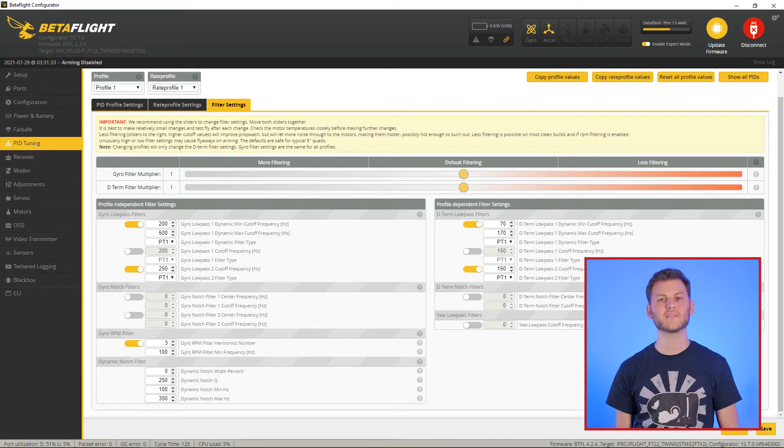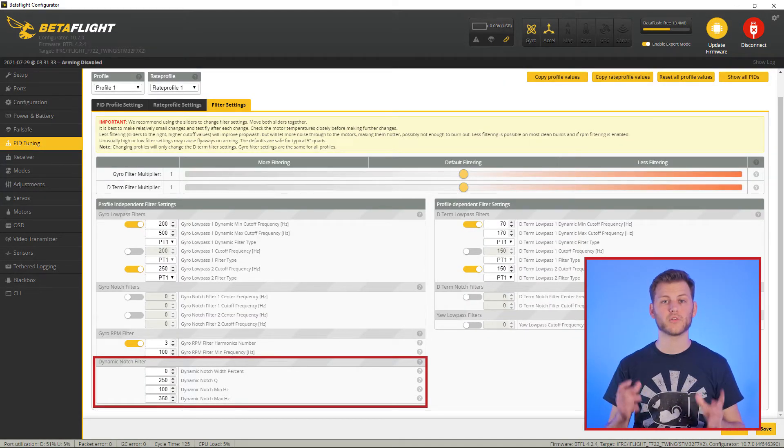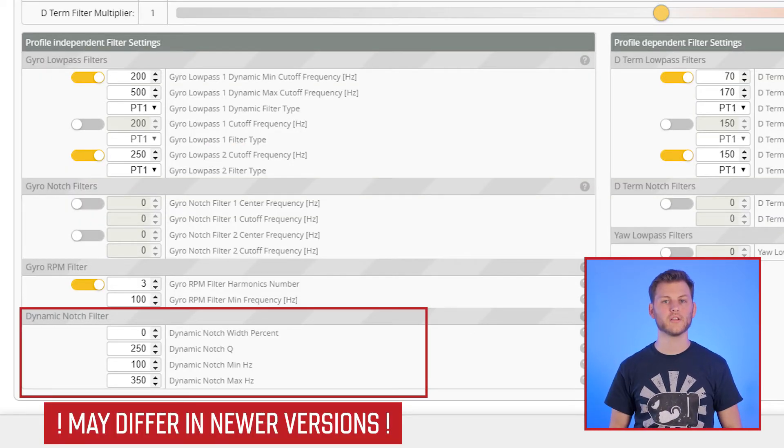The next step was already covered in my first video of the filter series, but I will quickly go through it. The default settings of the dynamic notch filter are designed to track the motor noise. Since we are now using the RPM filters, we can lower the dynamic notch to track any other undesirable noise in the lower frequencies by using these settings. Ok, we are all set now.